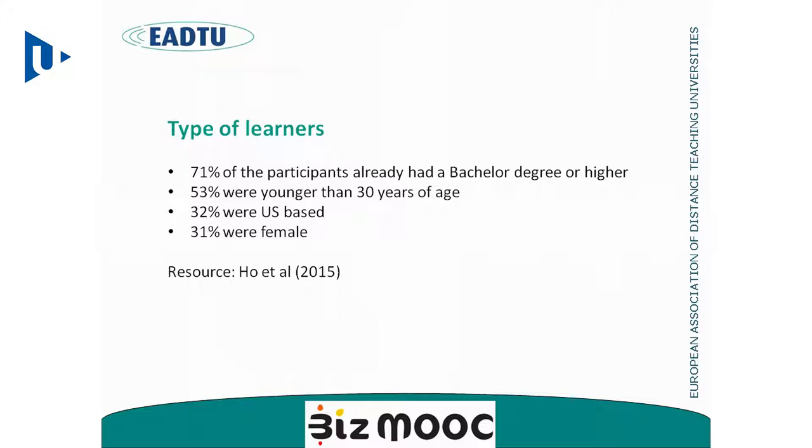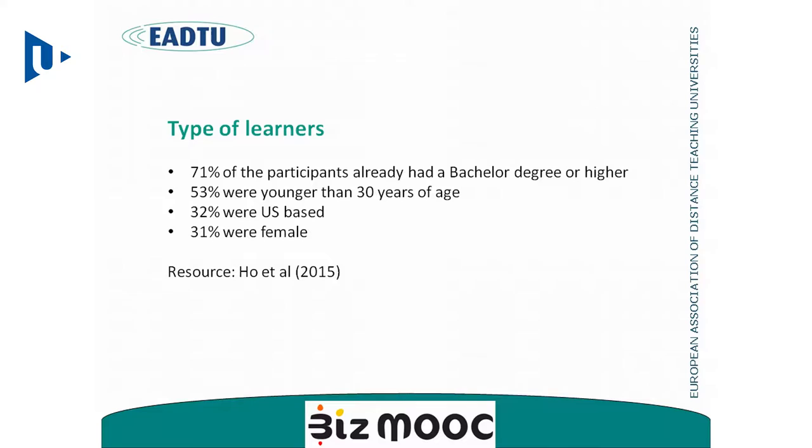You have to define what kind of learners there are. One study by Ho, analyzing mainly Coursera MOOCs, found that 71% of participants already had a bachelor's degree or higher education. More than 50% were younger than 38 years of age, and most were male — only 31% were female. At a conference in Prague, someone from a University in Austria tried to change this learner profile by being more open and targeting different learners, but the same figures came out.